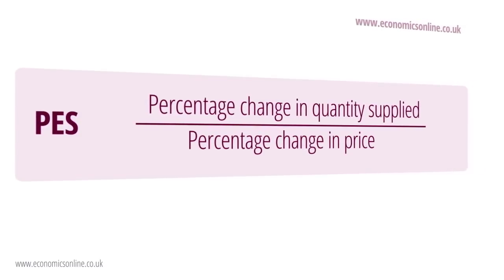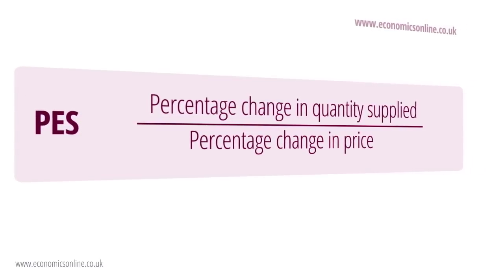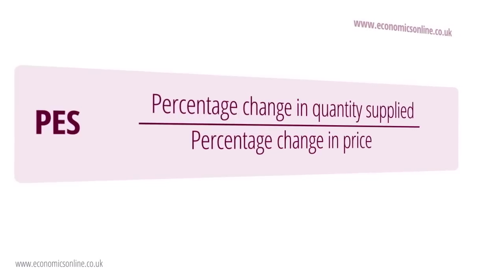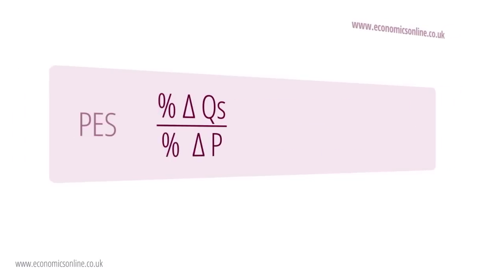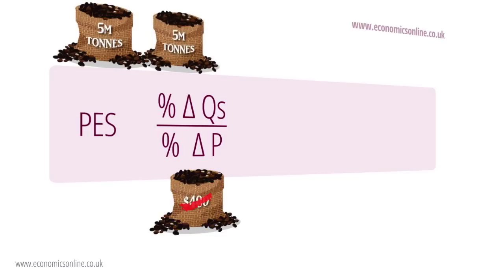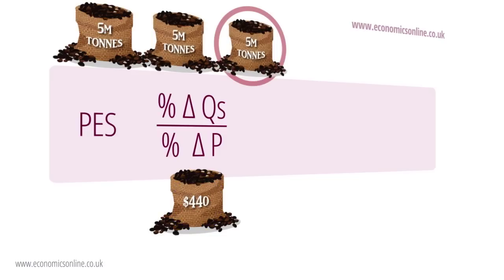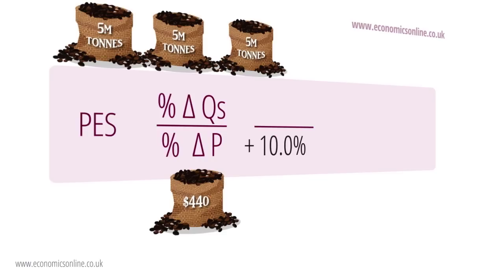For example, if as a result of a 10% increase in the price of coffee beans this year, the supply of coffee beans next year increases from 10 million tonnes to 15 million tonnes, the price elasticity of supply is plus 5.0.